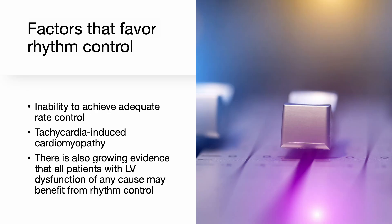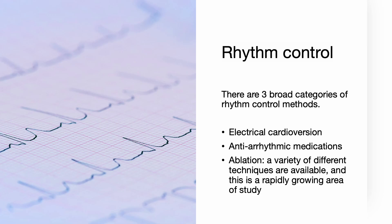Other factors that may favor rhythm control include patients with inability to achieve adequate rate control, patients with tachycardia-induced cardiomyopathy, and there is also growing evidence that patients with LV dysfunction of any cause may benefit from rhythm control. There are three broad categories of rhythm control: electrical cardioversion, anti-arrhythmic medications, and ablation.